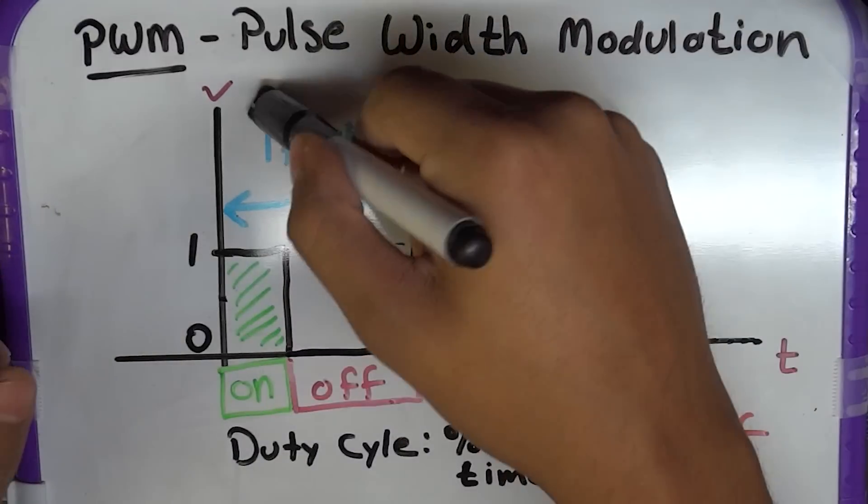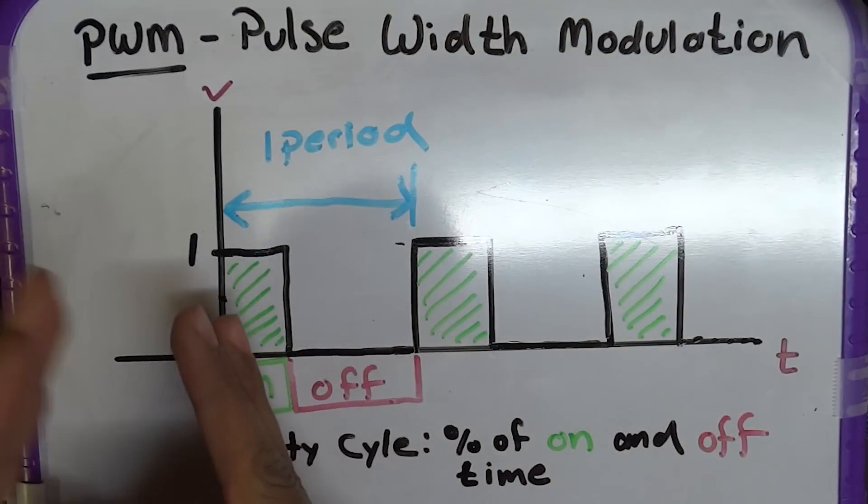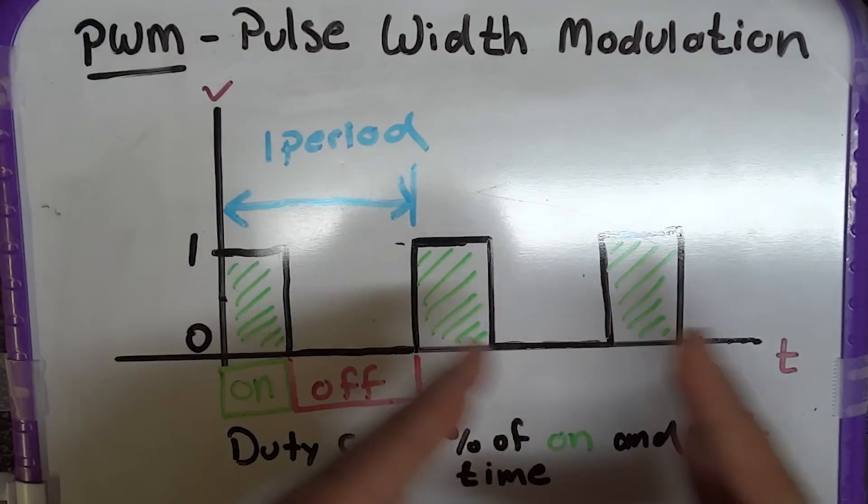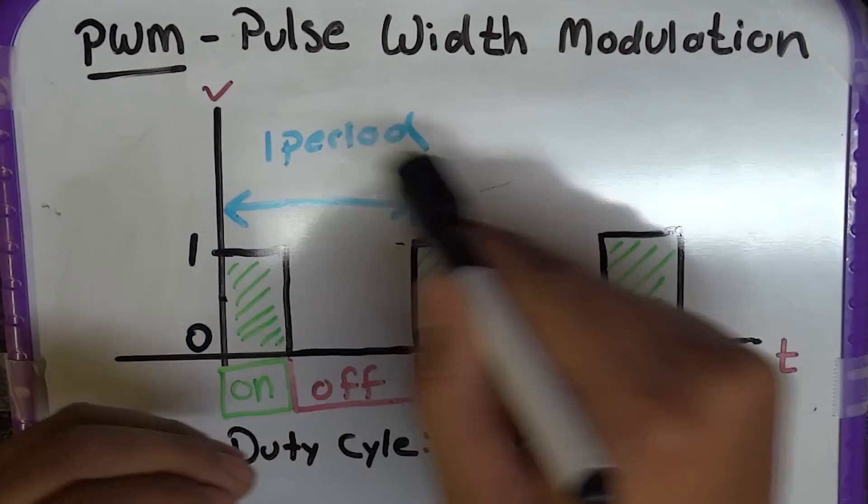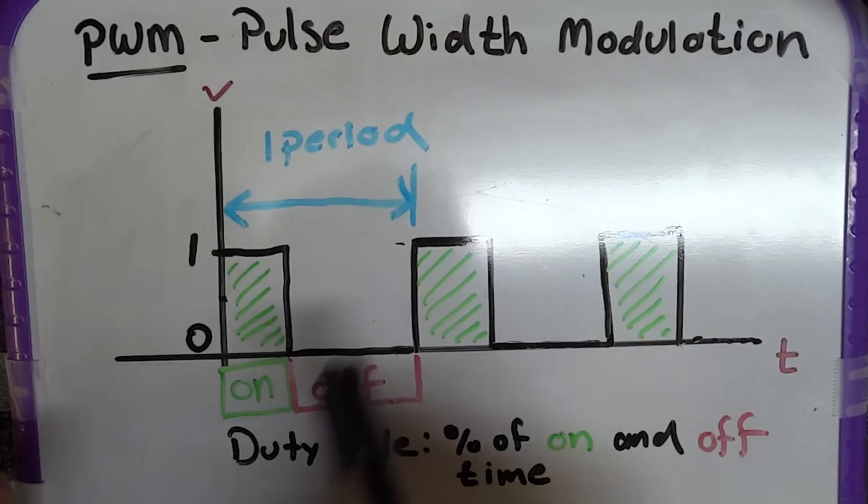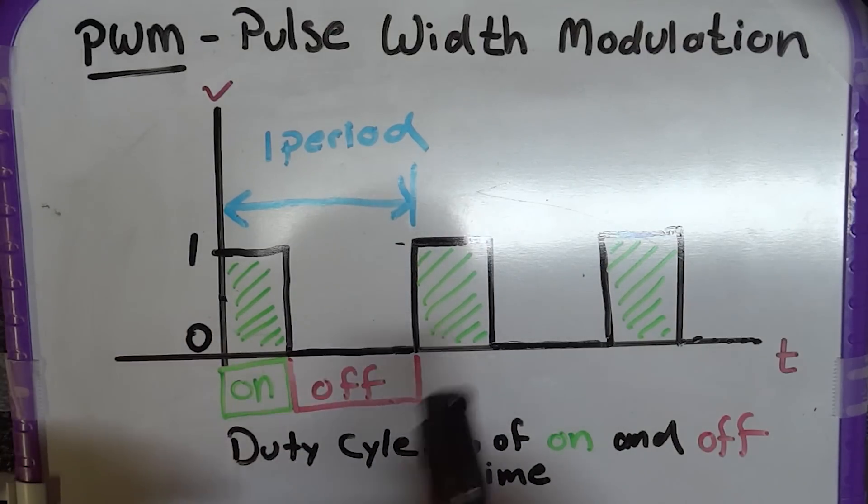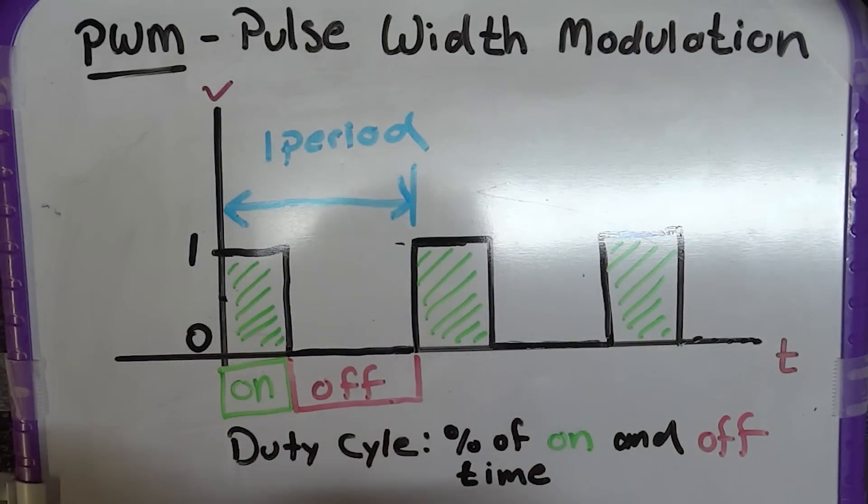So the period is how long one section is before it repeats. So in this case, we don't have a period because we didn't define the time, but it's on for a certain amount of time and it's off for a certain amount of time. That is one period. And then it just repeats over and over.